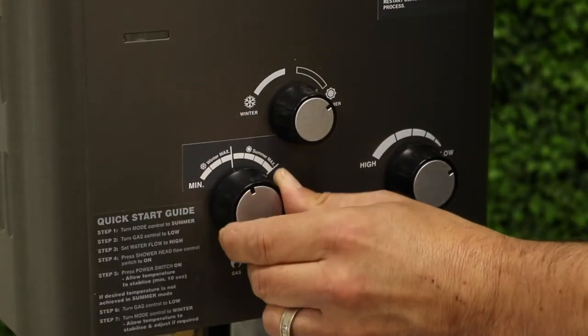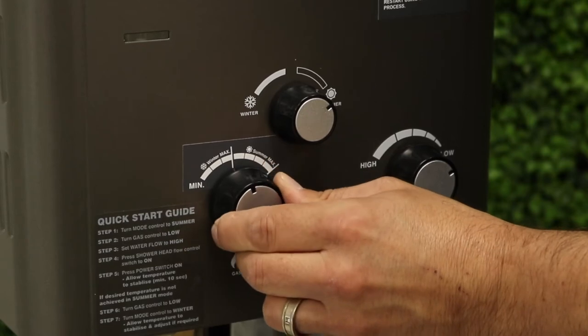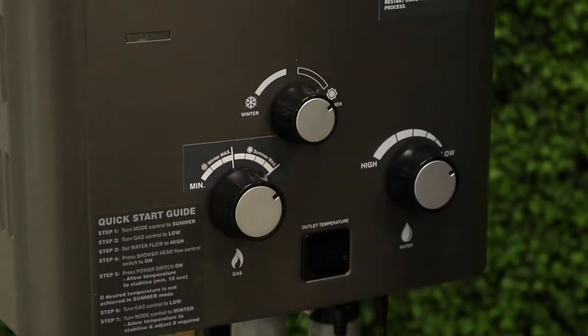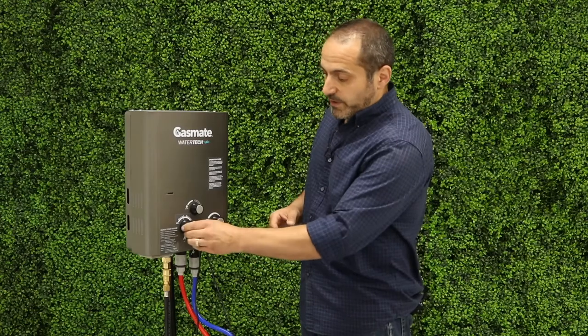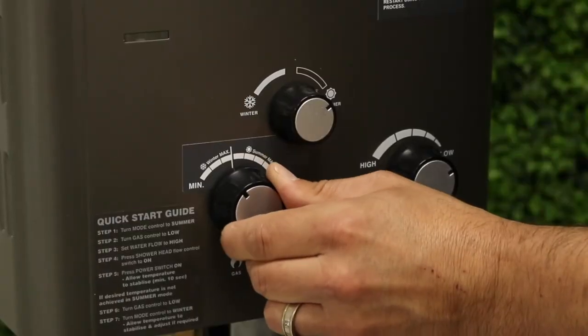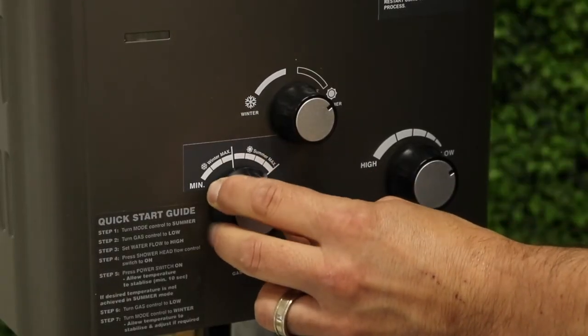And the min-max burner. This controls the burner in the unit which in turn helps to control the temperature. Within the one dial there is a max for both winter and summer settings.